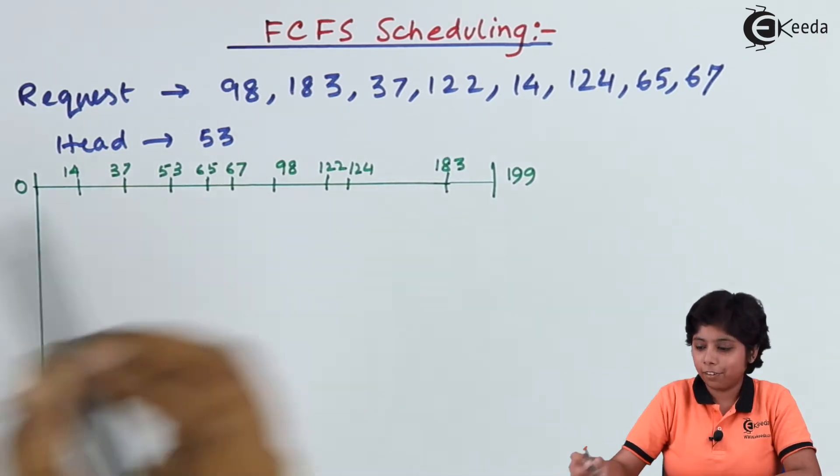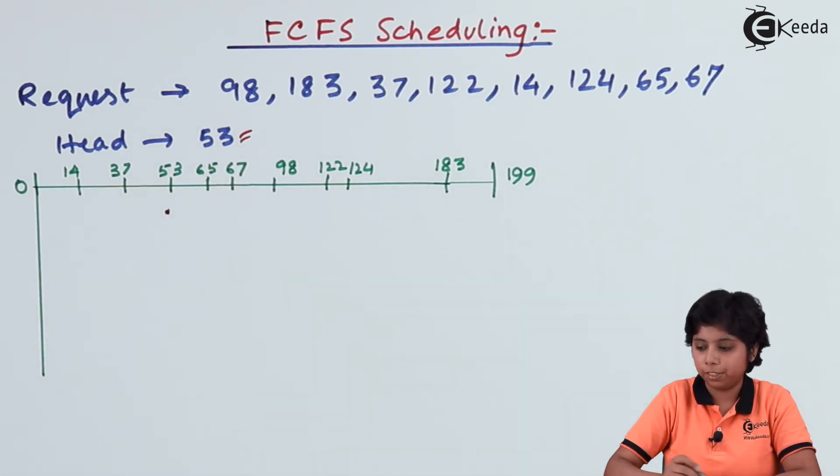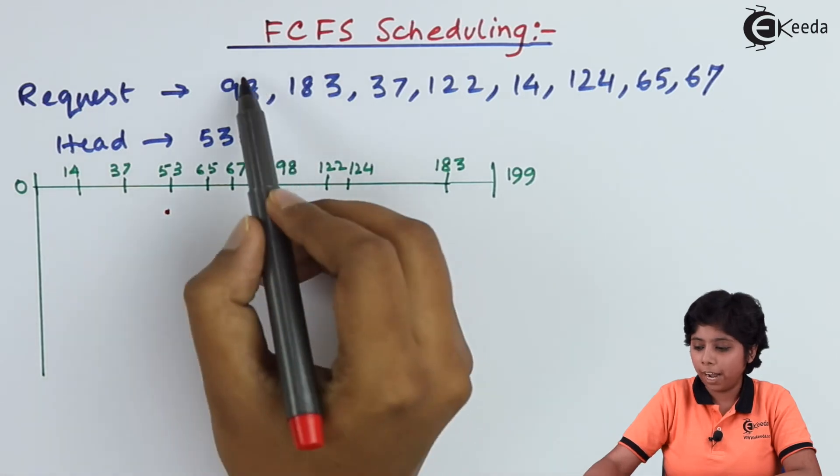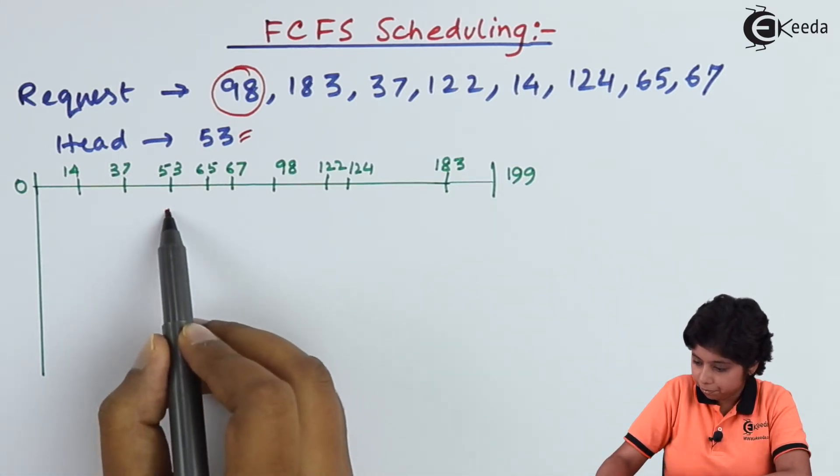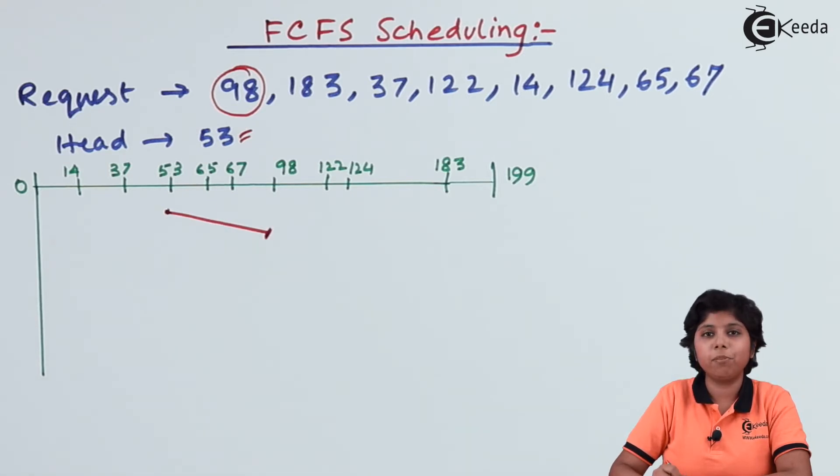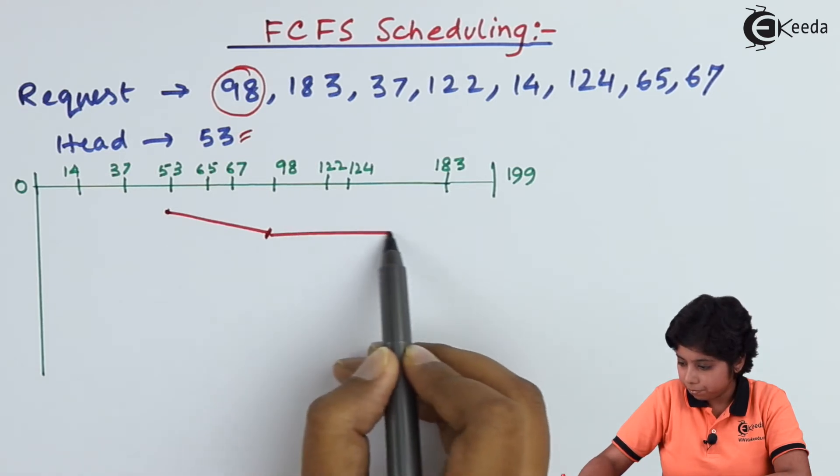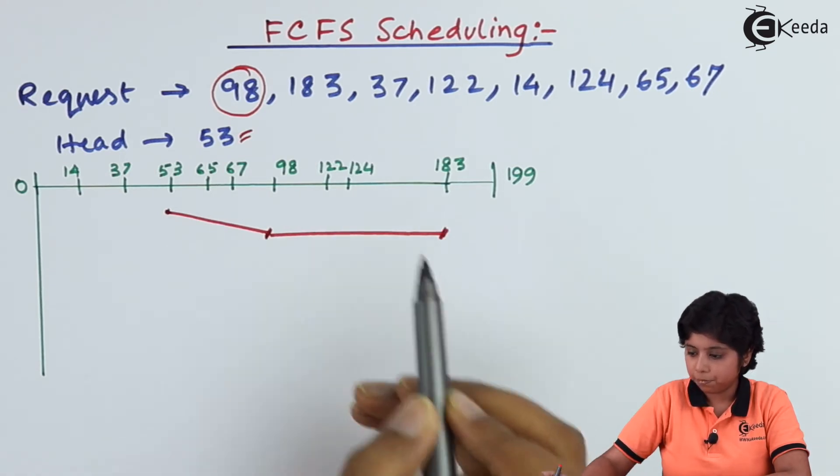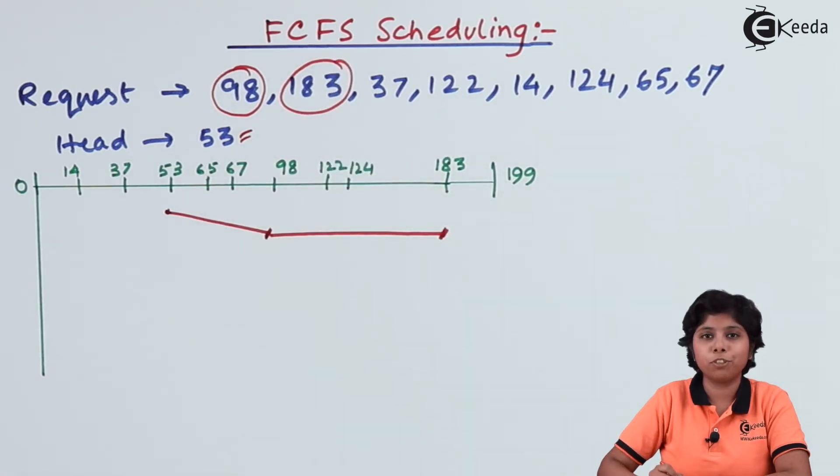As we can see, our head is at 53. Now we have 98, so we will move the head from 53 to 98. Next it will move to 183. Next it will move to 37.